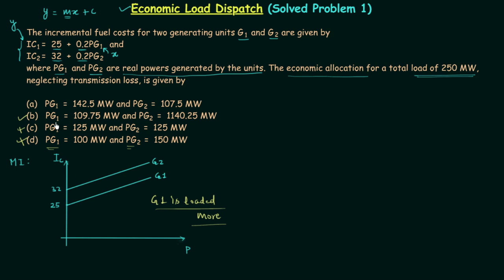Option B says PG1 is equal to 109.75 MW and PG2 is equal to 1140.25 MW. This option is straight away incorrect. So we are left with option A, so it must be true, but we will check it also. PG1 is equal to 142.5 MW and PG2 is equal to 107.5 MW. This shows generator G1 is loaded more than generator G2.